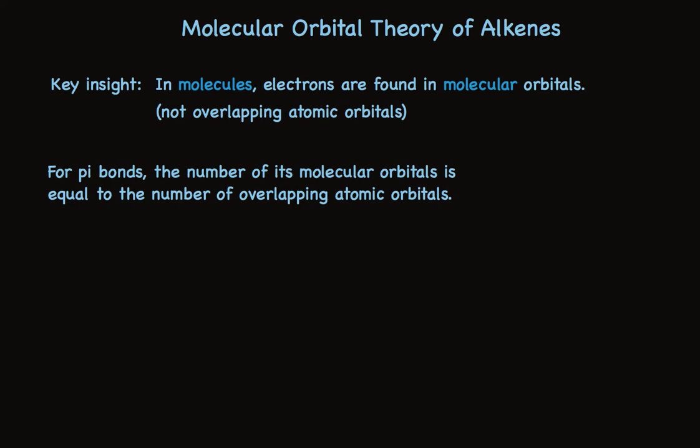The number of molecular orbitals for a pi system is equal to the number of overlapping atomic orbitals. So you count the number of p orbitals on adjacent carbons, and that will tell you the number of molecular orbitals you should expect that pi system to have. So for an alkene, there should be two molecular orbitals. For a diene, there should be four molecular orbitals.